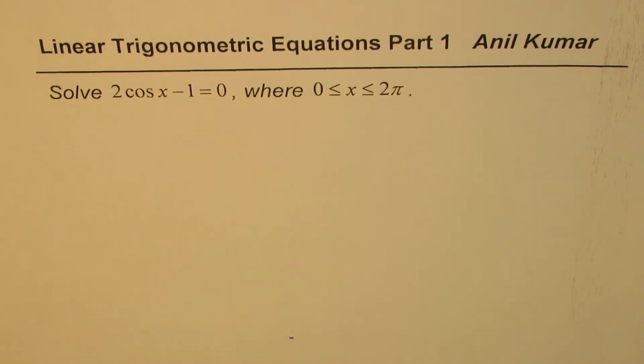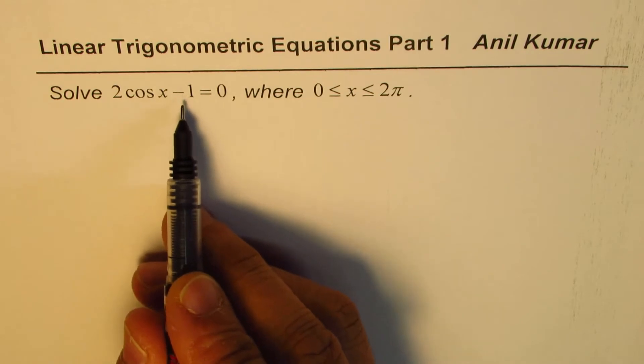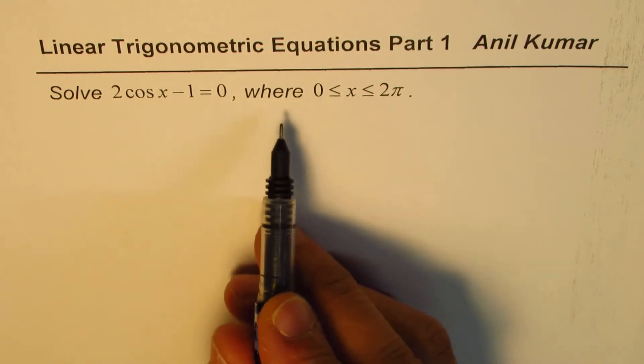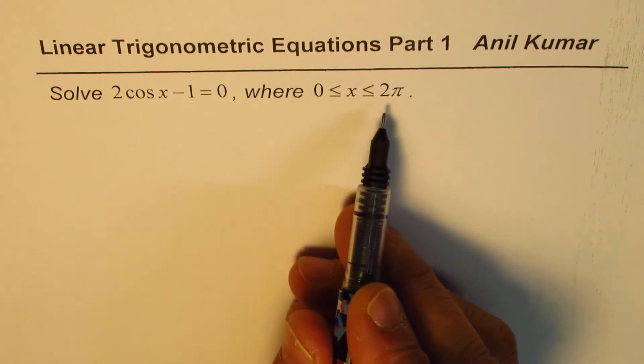I'm Anil Kumar and in this video we will learn how to solve a linear trigonometric equation. We need to solve 2cos(x) - 1 = 0 where x is greater than or equal to 0 and less than or equal to 2π.